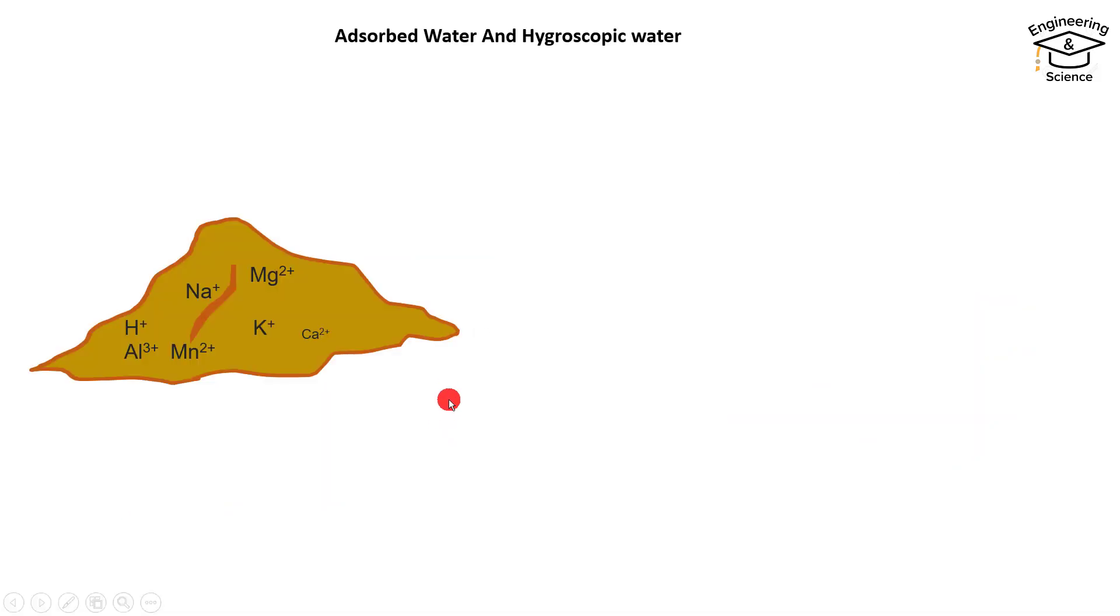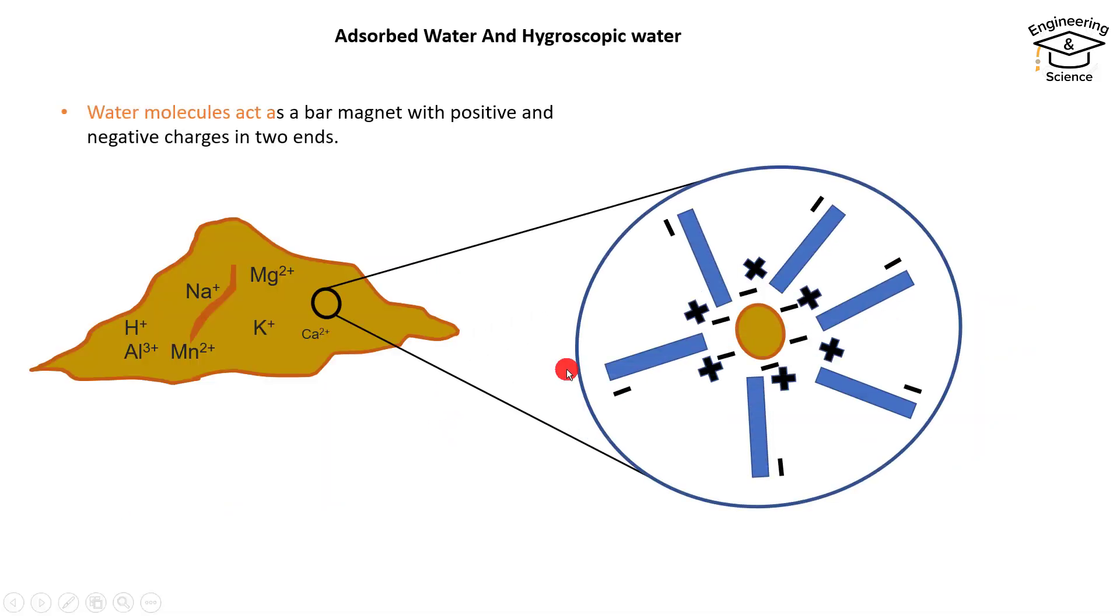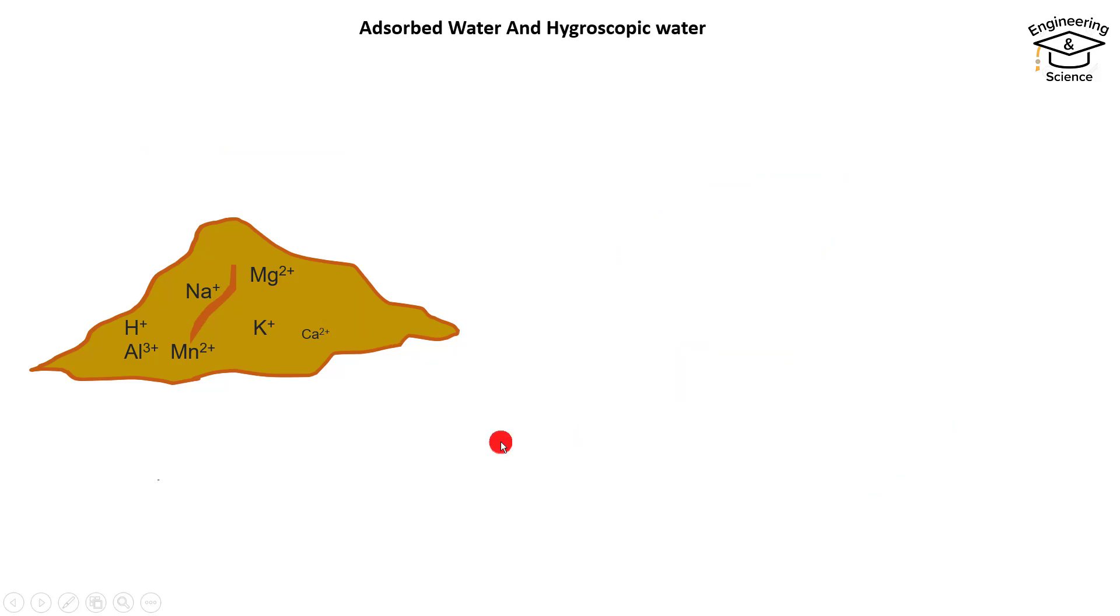If we look in detail, we see that the water molecules act as a bar magnet with positive and negative charges at the ends, sticking around the soil particle with negative charge. Let's see how adsorbed water arranges around the soil particle.